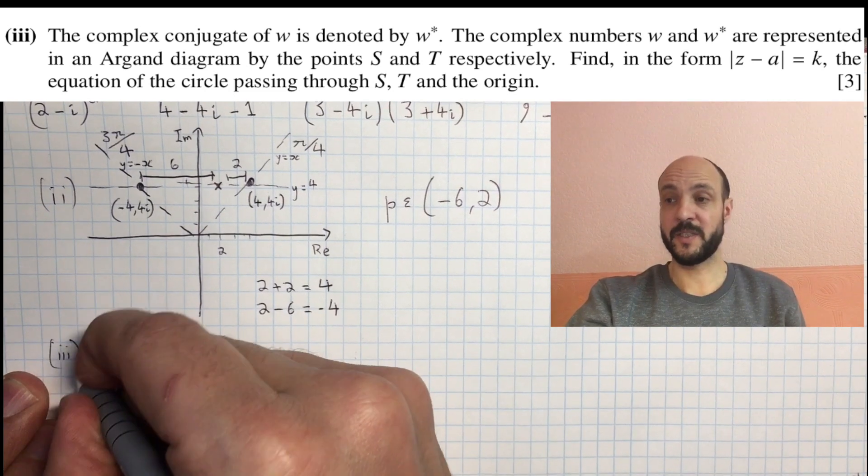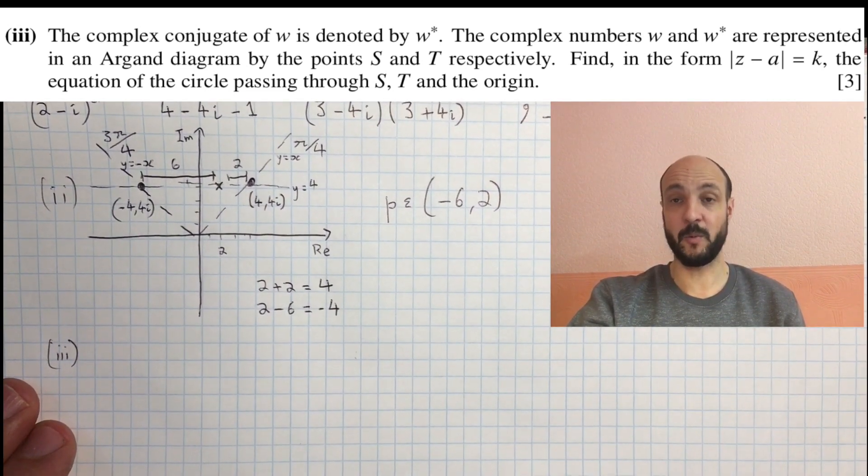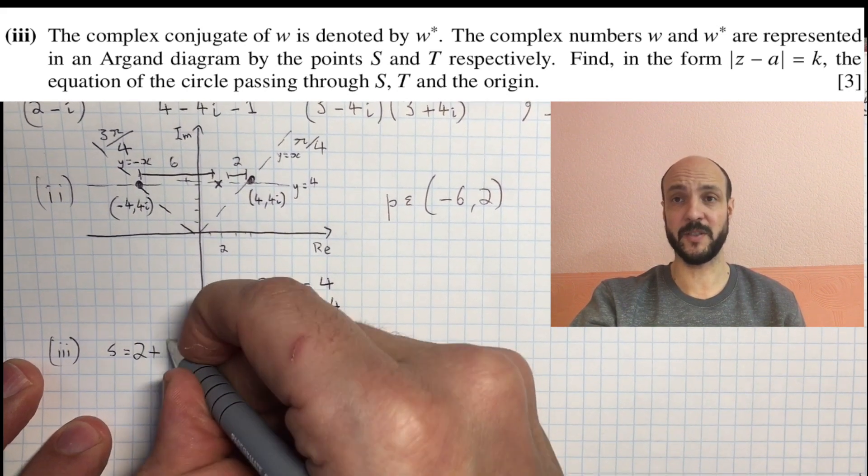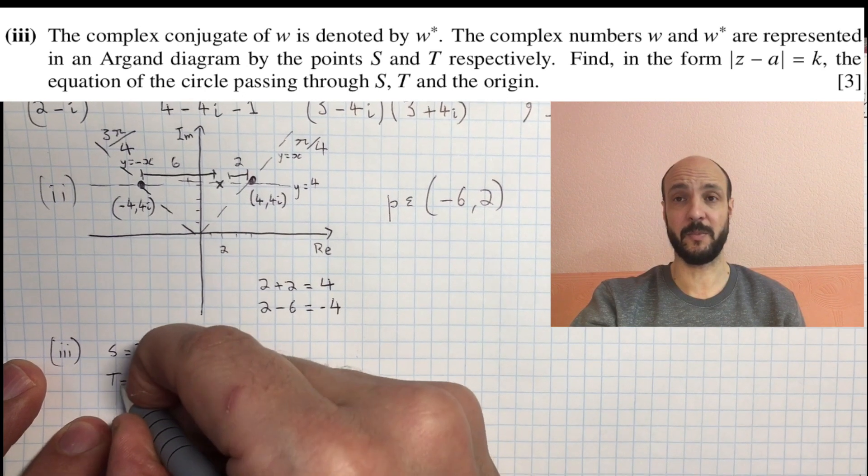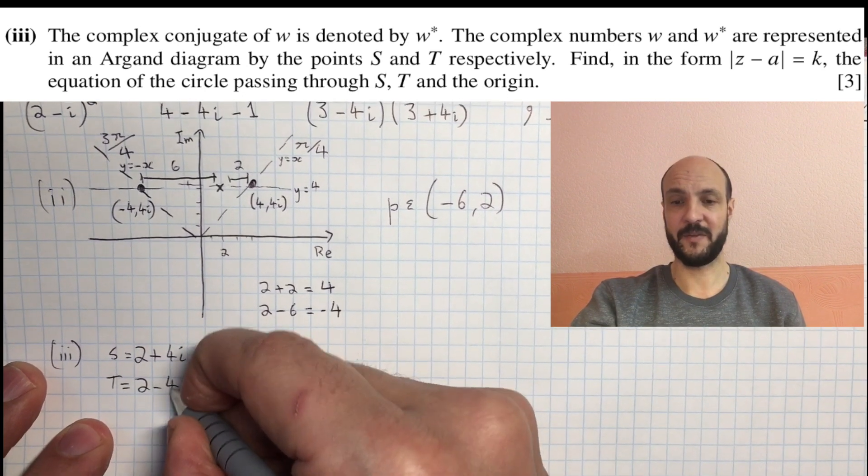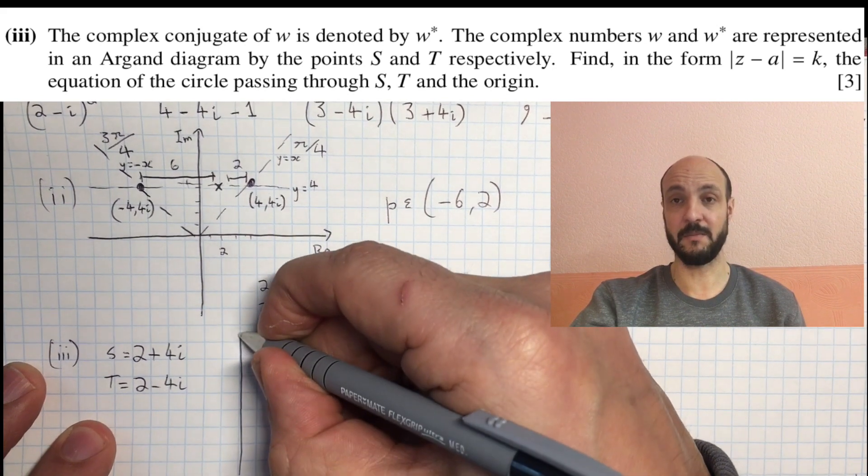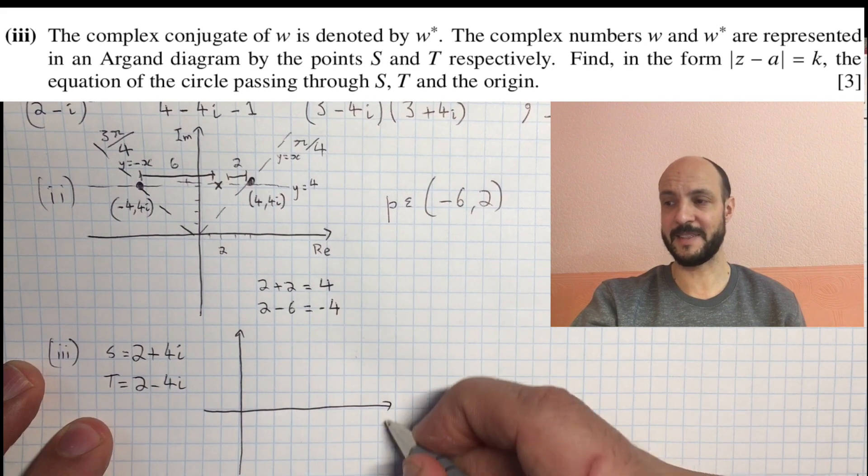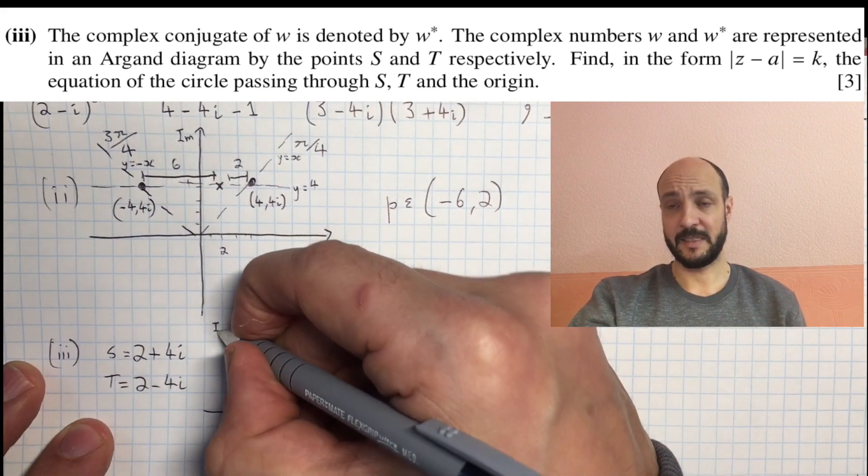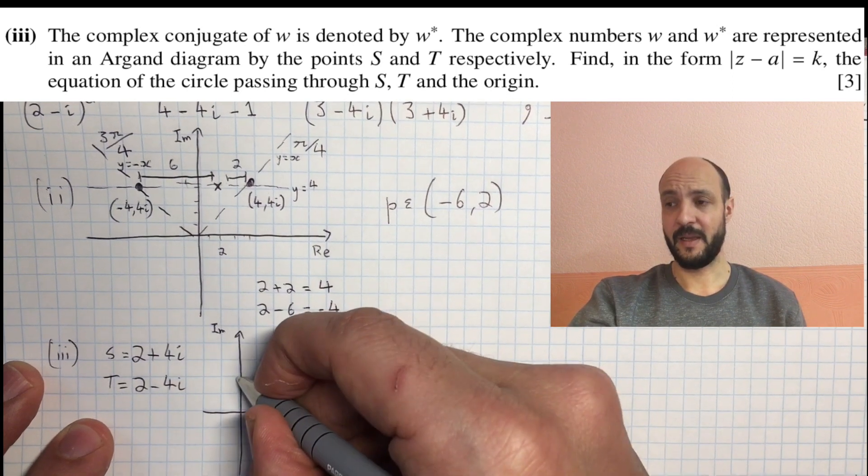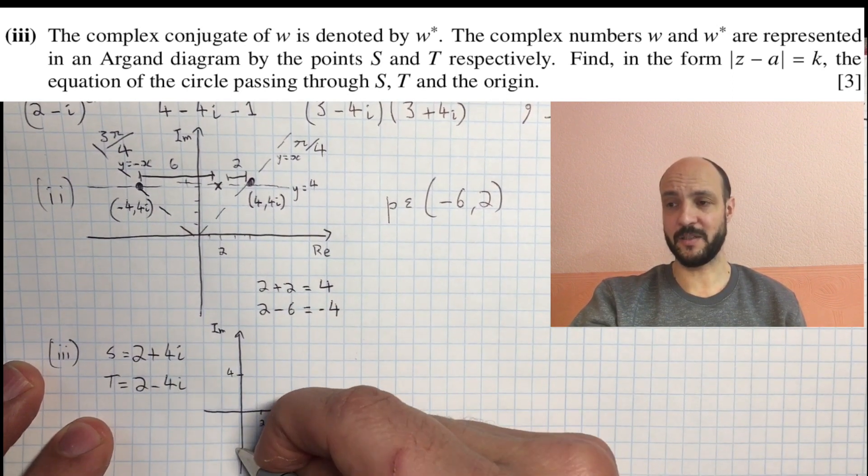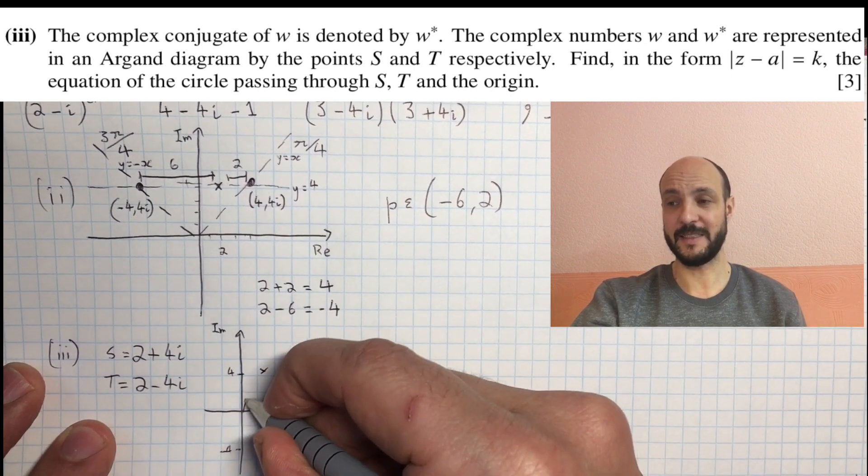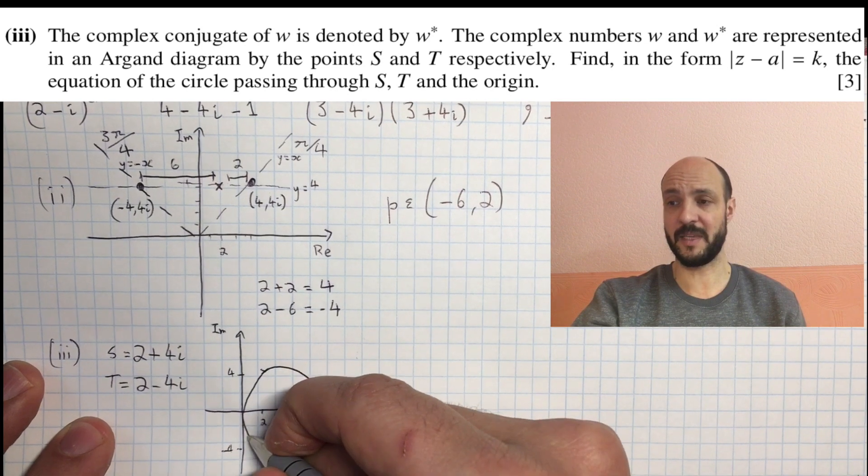In our third question, we're told that our w, our 2 plus 4i, is one point on a circle, and that its conjugate, 2 minus 4i, is also a point on a circle, and that the origin, 0, 0, is also a point on this circle. And we have to find the equation of the circle in this modulus form. So we're told the form we wanted it is mod of z minus a equals k. So let's start again with a sketch of the Argand diagram, and think basically what our circle is going to look like. We've got 2 plus 4i is one intersection point, 2 minus 4i, and 0, 0. So our circle should look something like this.